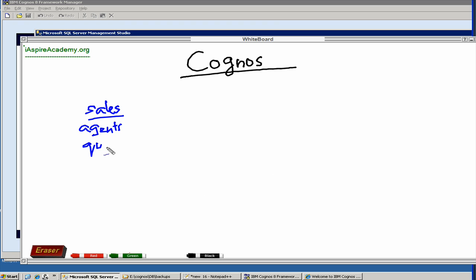We have quarters. And we have region. Now, this is a fact table. And these are all dimensions.